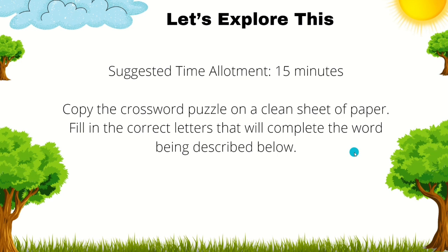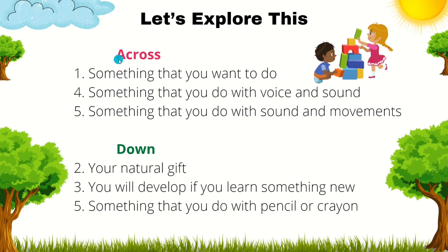We still have more activities to do for our homeroom guidance. For this activity, suggested time allotment is 15 minutes. We will have a crossword puzzle. Before answering it, copy the crossword puzzle on a clean sheet of paper, then fill in the correct letters that will complete the word being described. For number one, the hint is: something that you want to do. The answer is 'interest.' Very good — let's check our crossword puzzle. Number one's answer is 'interest.'